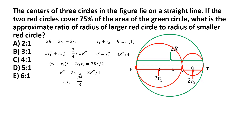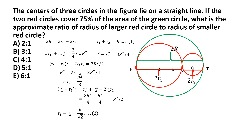Next, consider (R1 − R2)² = R1² + R2² − 2·R1·R2. We know R1² + R2² = (3/4)·R², and 2·R1·R2 = R²/4. So (R1 − R2)² = (3/4)·R² − (1/4)·R² = R²/2. Therefore R1 − R2 = R/√2. Call this Equation 2.